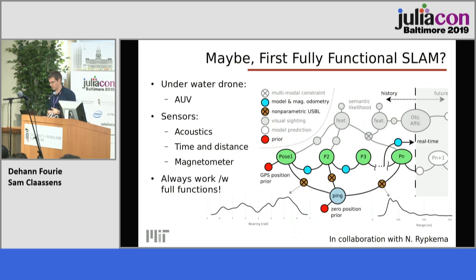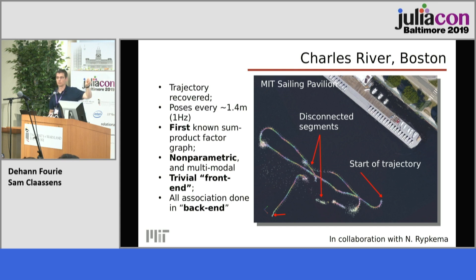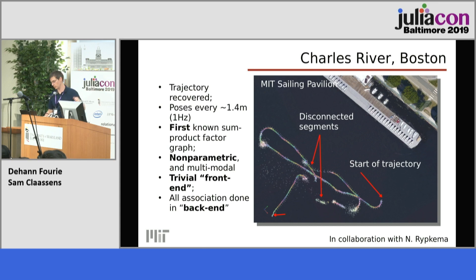Here's a much bigger example: an underwater robot where we build a factor graph using beliefs that are clearly very non-Gaussian. We assemble them in the factor graph and solve. The vehicle starts — this is the Charles River in Boston — does a trajectory over about eight minutes and comes out. There is a small gap, but I never did any engineering to process this data. I took the correlator output raw from the acoustic sensor, plugged it into Caesar, and was able to solve it.